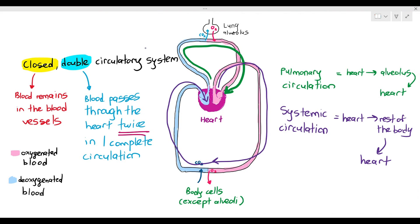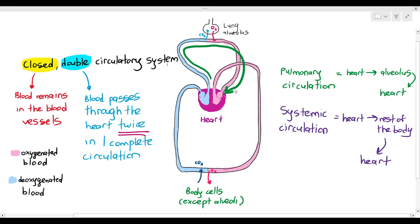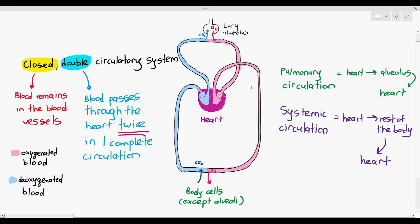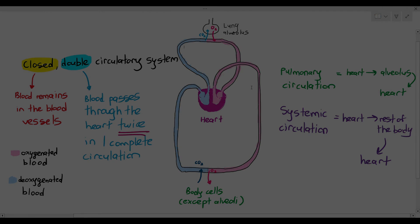The purpose of pulmonary circulation is to make the blood oxygenated — from deoxygenated it becomes oxygenated. The purpose of systemic circulation is to provide oxygen and other substances to the body cells.